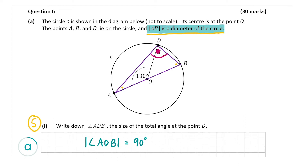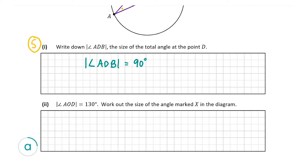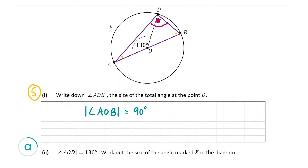If you aren't familiar with theorems and their corollaries, I recommend going back over them as they can really help with questions like this. Now let's look at A part 2: the angle AOD is 130 degrees and we have to work out the size of the angle marked x. The angle AOD here is equal to 130 degrees as we're told.